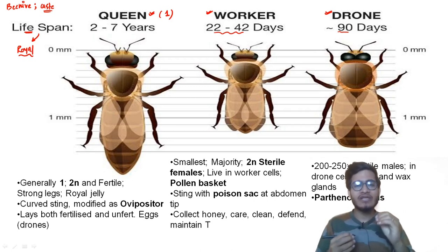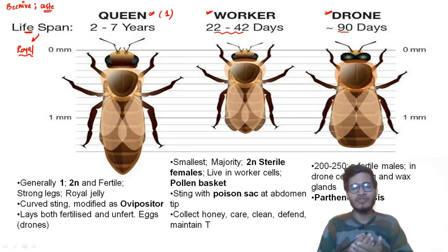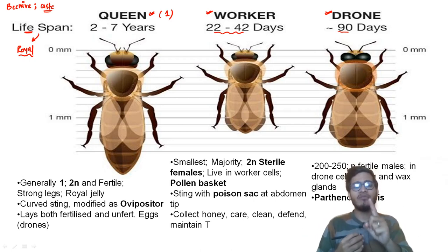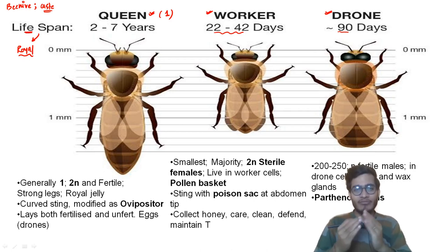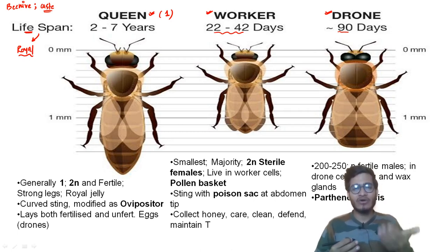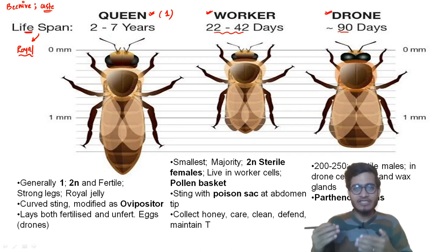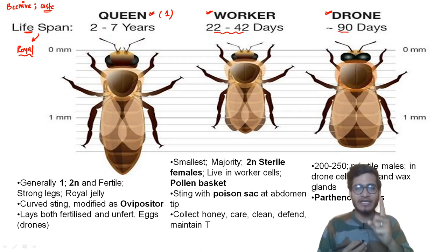The queen secretes important pheromones — insect hormones — which inhibit the remaining females from developing into a queen, so there can be only one queen per beehive. But when the queen dies, accessory signals are received by the remaining females, and one of them feeds on royal jelly and then develops into the new queen.